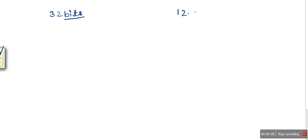In this 32-bit format, the first bit is reserved for the sign. If the number is positive we will put zero here, in case of negative we will put one.